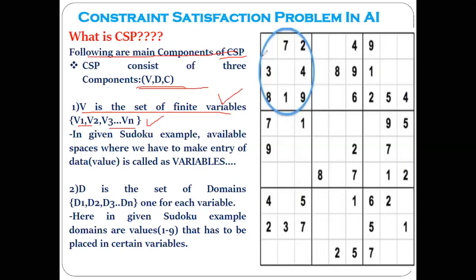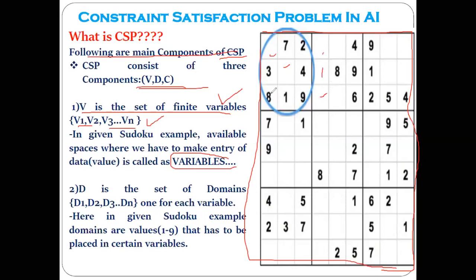What exactly are the variables? In the given Sudoku example, the available spaces where we have to make entries or put values are called the variables. In this Sudoku setup, these spaces — both filled and empty — represent the finite set of variables.